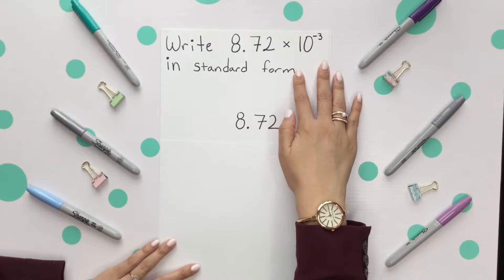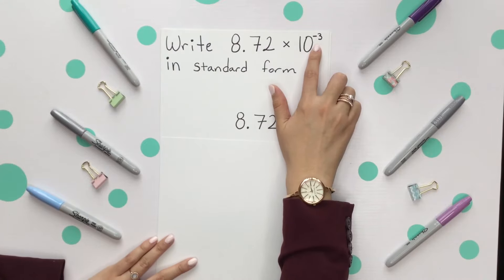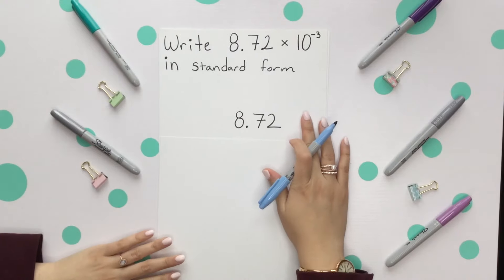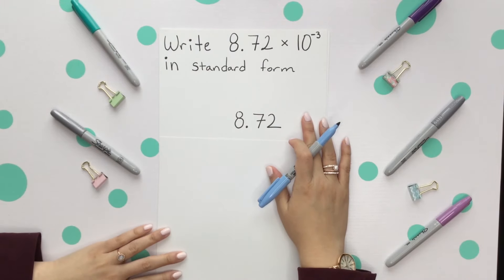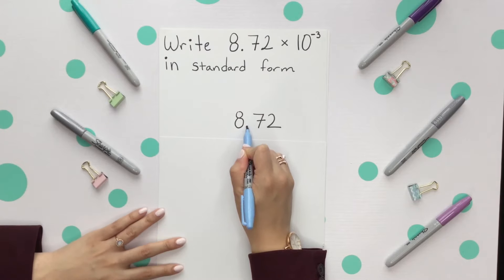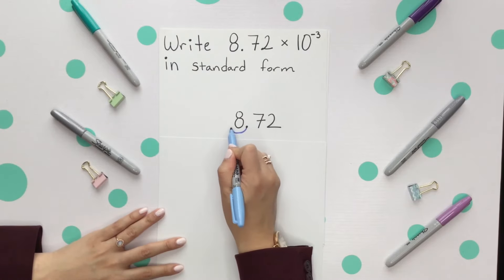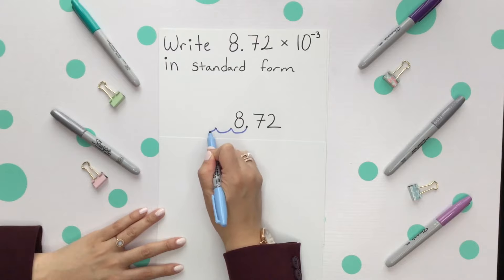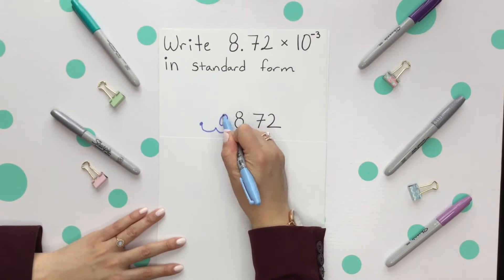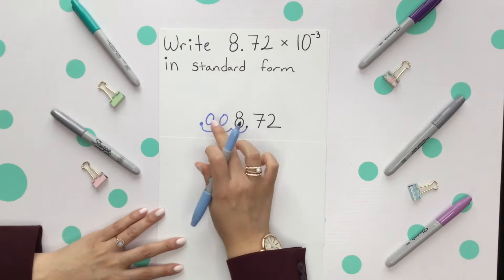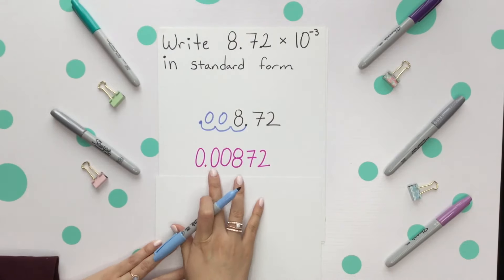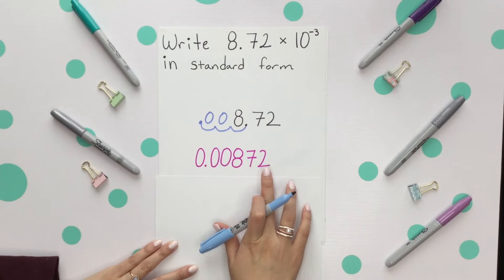We have a negative 3 as our exponent, which tells us it's going to be a number less than 1. So we're going to move the decimal place to the left 3 times: 1, 2, and 3. I'm going to place a 0 wherever there were any missing spaces, and our final answer is 0.00872.